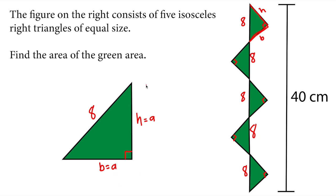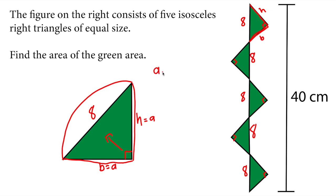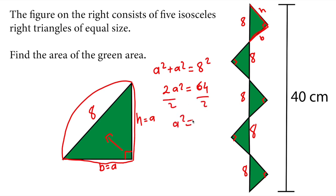By the Pythagorean theorem, the sum of the squares of the two perpendicular sides equals the square of the hypotenuse. In this case, A² + A² = 8², so 2A² = 64. Dividing each side by 2, we get A² = 32. We will need A² to calculate the area, so I will leave it like that.